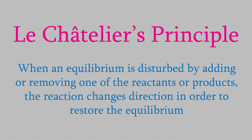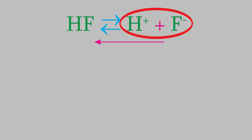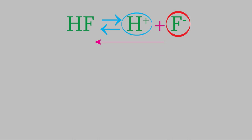For example, suppose we have this reaction in which hydrofluoric acid dissociates to form hydrogen ions and fluoride ions. If the reaction were at equilibrium and we decided to add more products to the beaker, that would upset the equilibrium, and Le Chatelier's Principle tells us the reaction would shift to the left. But think about what that means: if we were to add fluoride ions, the reaction would shift to the left, and the concentrations of both products — including the hydrogen ion — would decrease.